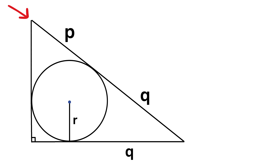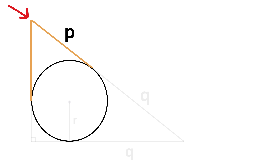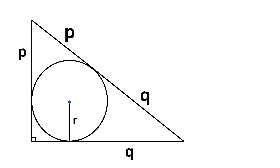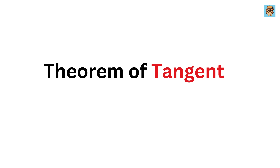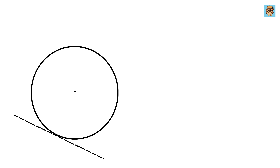Similarly, at another vertex of the triangle, the two line segments act as tangents to the circle, so that piece equals p. Now consider the tangent and radius theorem: a tangent is a straight line that touches the circle at exactly one point without crossing it.